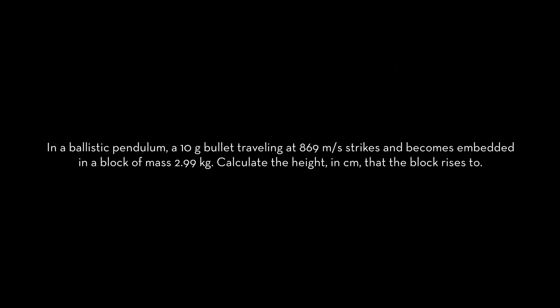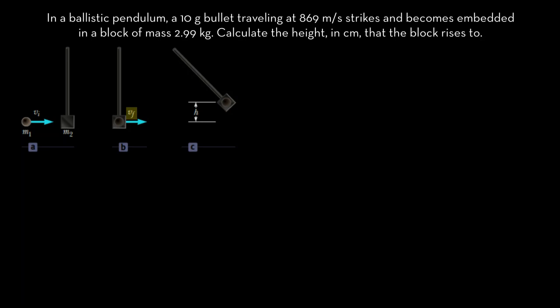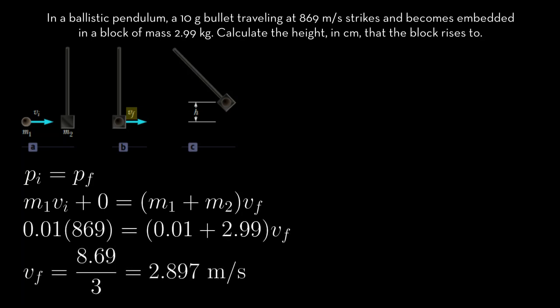In a ballistic pendulum, a 10-gram bullet traveling at 869 meters per second strikes and becomes embedded in a block of mass 2.99 kilograms. Calculate the height in centimeters that the block rises to. To solve this, we use conservation of momentum to find the velocity of the bullet and block after the collision, and then use conservation of mechanical energy to figure out the height the block rises to. According to conservation of momentum, the momentum of the system before the collision, at point A, equals the momentum after the collision, at point B. The momentum before includes the bullet's momentum and the block's momentum; the block is at rest, so that term is zero. After the collision, the bullet becomes embedded in the block, so they can be treated as one object. The block's momentum is its total mass times its velocity right after the collision. Plugging in and solving, we get that the velocity right after the collision is 2.897 meters per second.